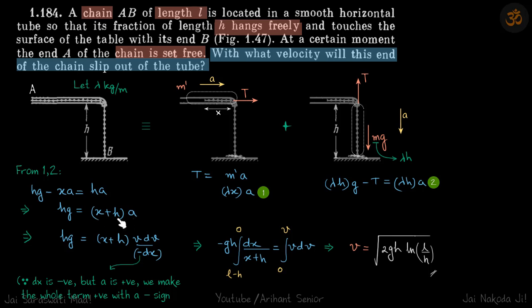We'll write acceleration as vdv by minus dx. Why minus dx? Because in this term everything is positive—a is positive, x plus h is also positive, and hg is of course positive. Everything we have written in terms of magnitude. But if you write vdv by dx, you can see that x is reducing with time, so dx is a negative term. To make this whole term positive, we add a minus sign here.